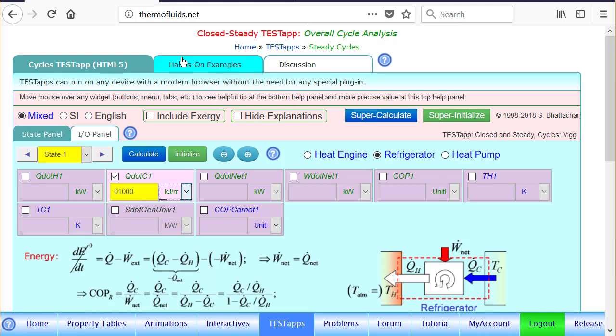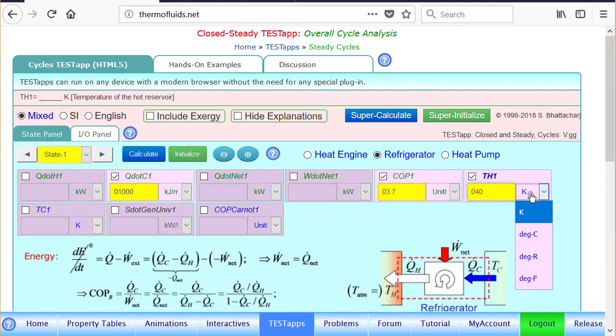The COP is given, 3.7. And the temperature of the outside, which is the hot reservoir in this case, is 40 Celsius. And temperature inside, which is the cold reservoir, is 20 degrees Celsius.